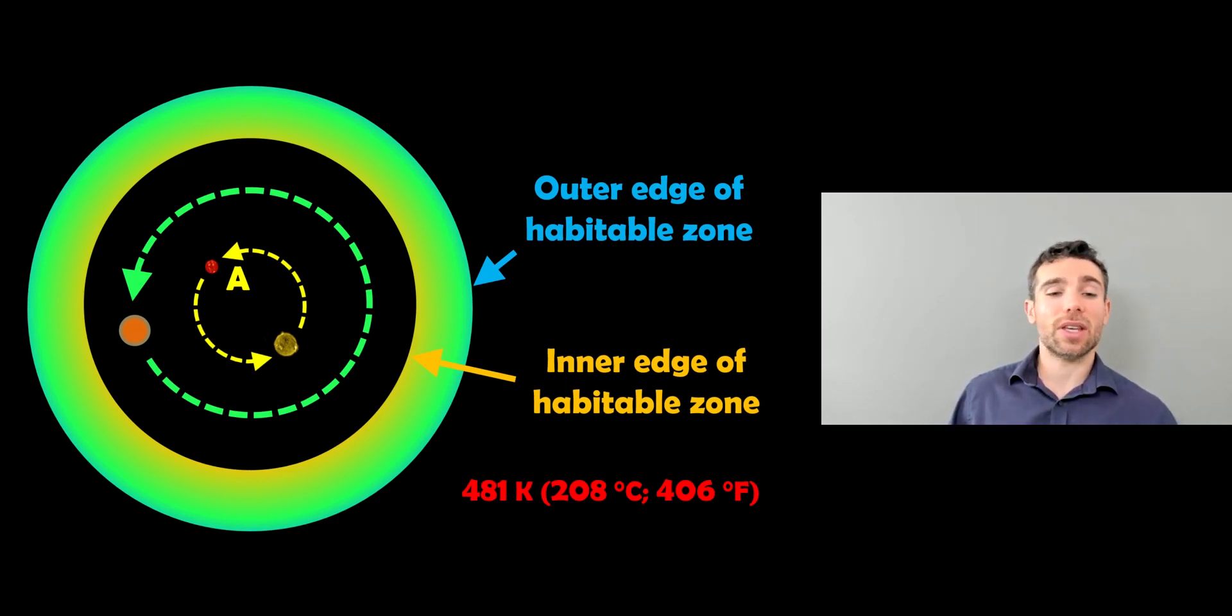But unfortunately, the habitable zone around this binary star system in this system is further out than where the planet actually sits. So you've got the inner edge of the habitable zone there, and the outer edge, and then the actual orbit of the planet is quite a way inside of that.